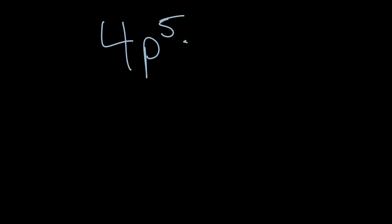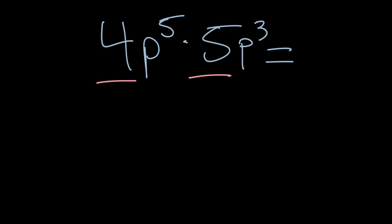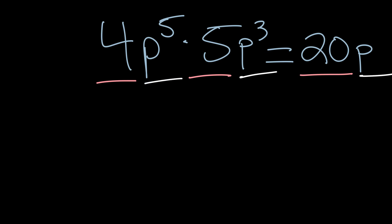Let's keep going. What if I had 4p to the 5th power times 5p to the 3rd power? We notice the pattern: multiply the coefficients — 4 times 5 equals 20 — and add the exponents — p to the 5th times p to the 3rd is p to the 8th. So the answer is 20p to the 8th.